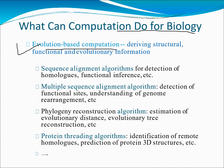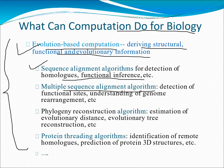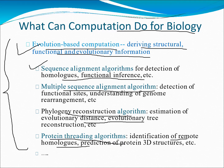What can computation do for biology? First, evolution-based computation: deriving structural, functional, and evolutionary information. Second, sequence alignment algorithms for detection of homologous function inference — including global and local alignment, multiple sequence alignment algorithms such as UPGMA and neighbor joining, and phylogeny reconstruction algorithms for estimating and constructing evolutionary trees.